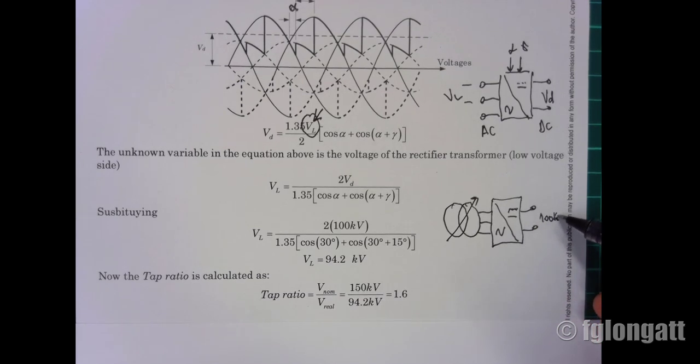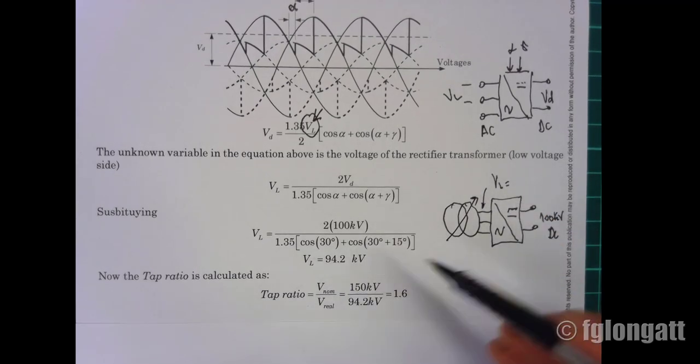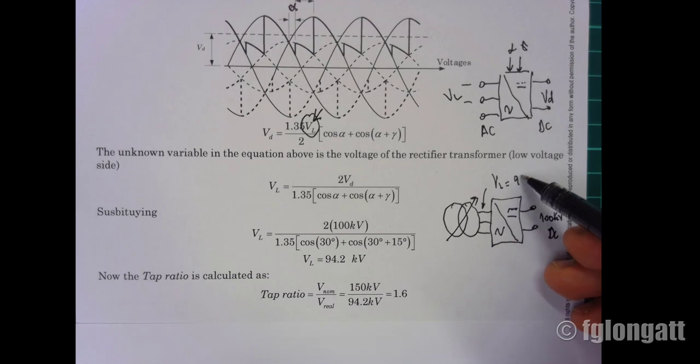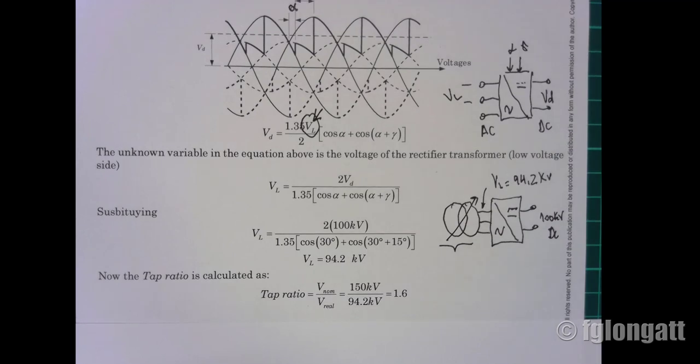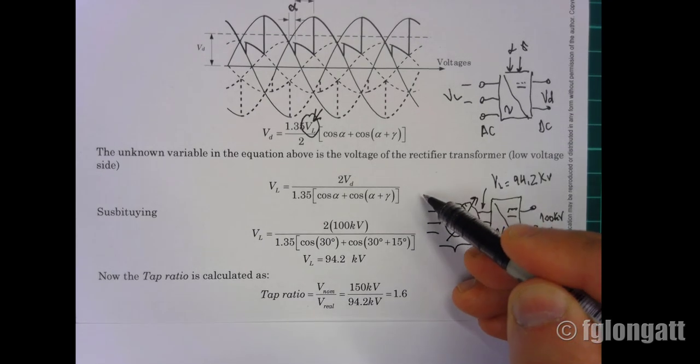This transformer, as I said before, is a typical transformer coming from high voltage, 345 kV, going to low voltage, and the typical low voltage here is 150 kV.